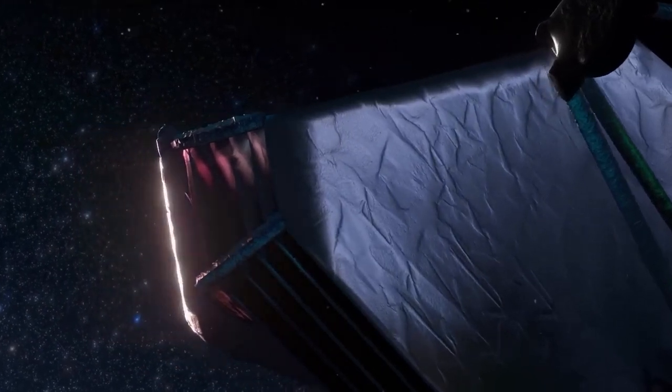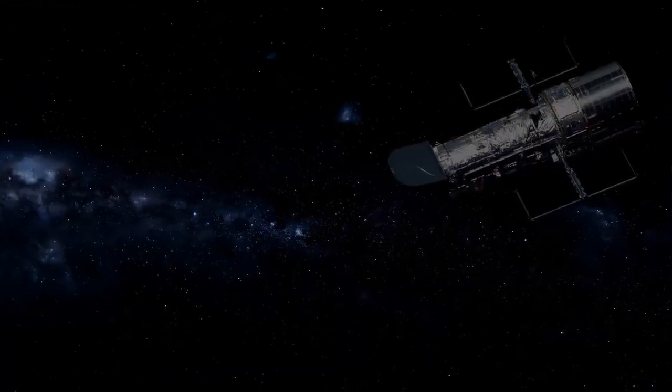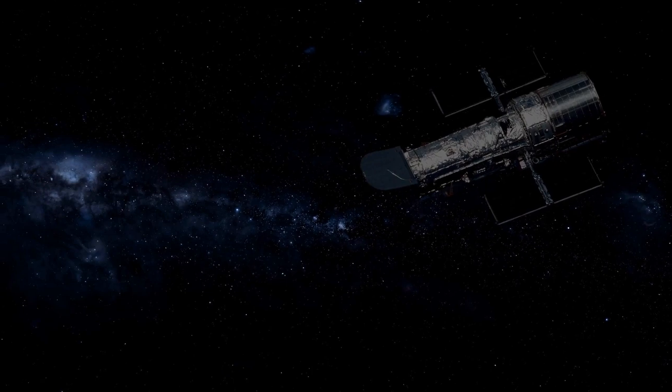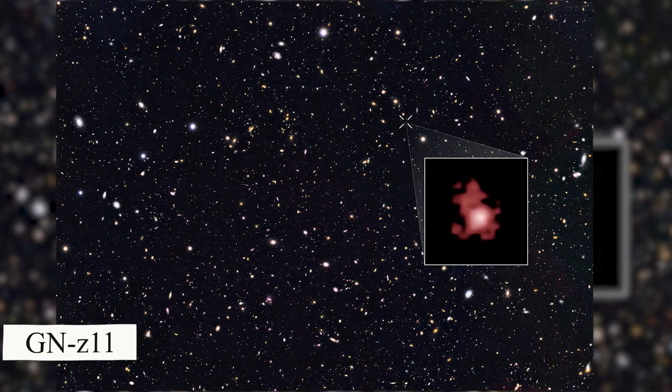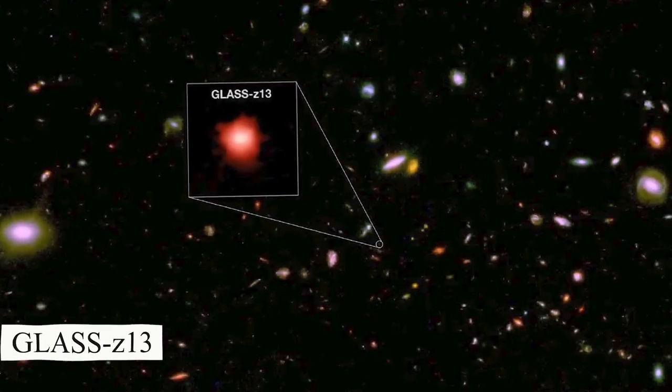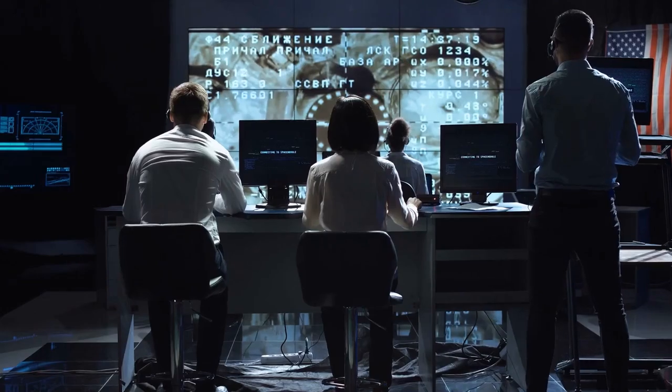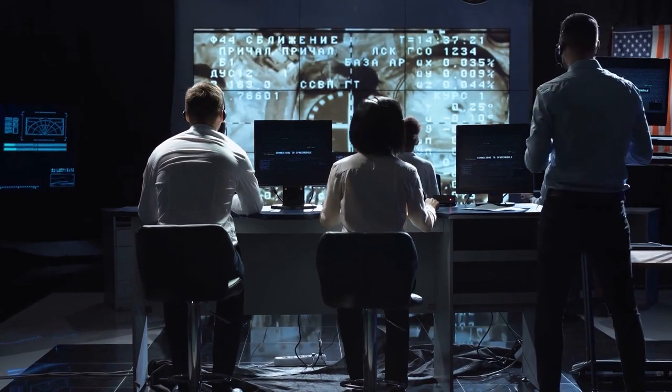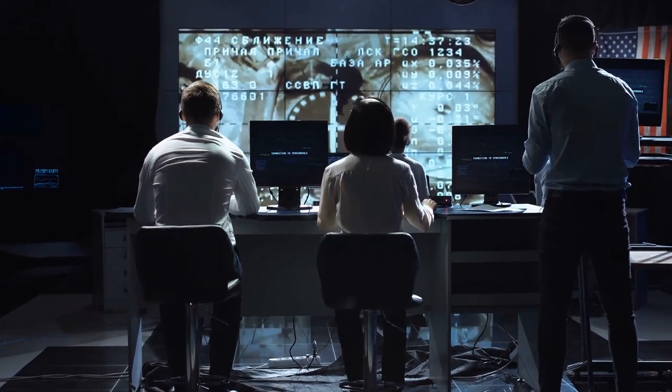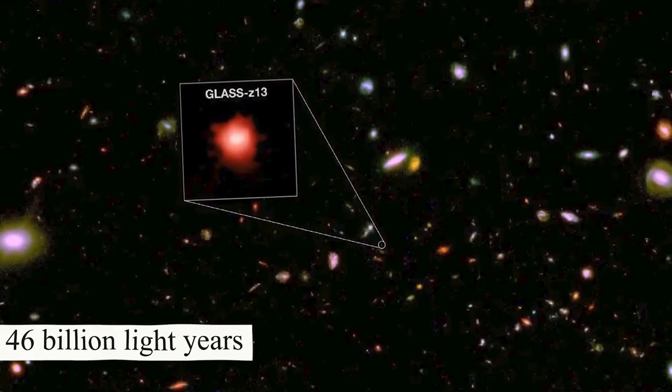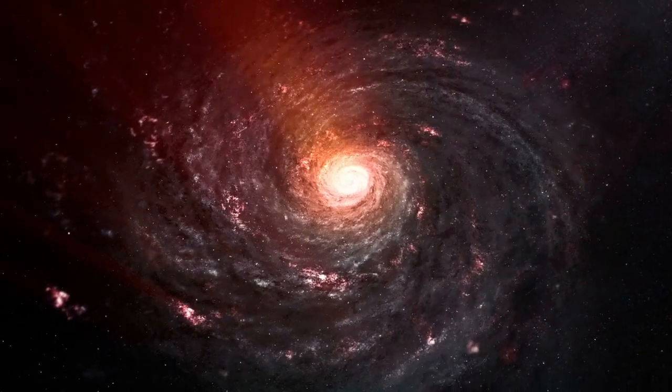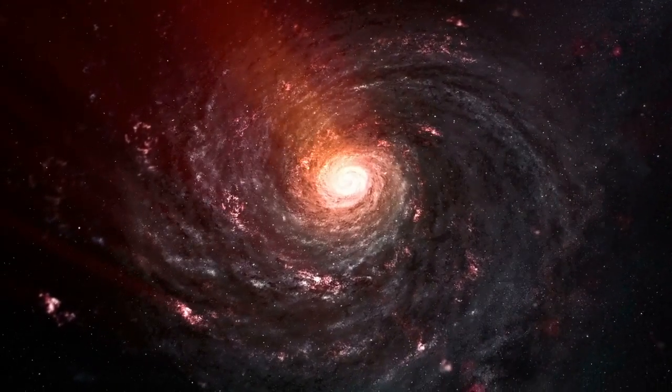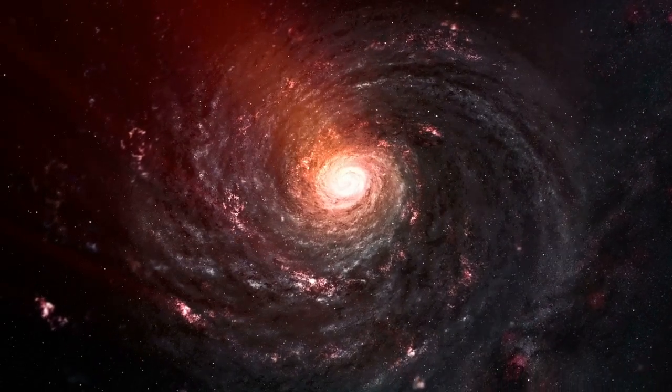Before the invention of the James Webb Space Telescope, the furthest galaxy that we had captured using the Hubble was the GN-Z11. Webb broke this record by capturing the image of GN-Z13, and according to scientists, the light passing from the surface of this galaxy is said to be 46 billion light years away. This scattering can be reported as one of the very first scatterings of light and is considered to be the edge of the universe.